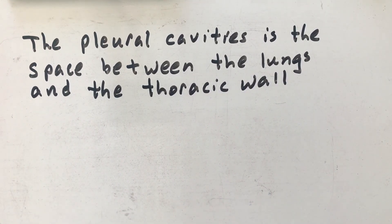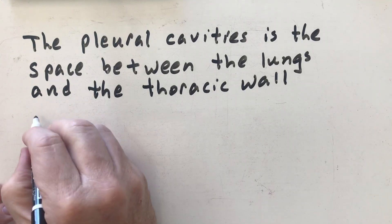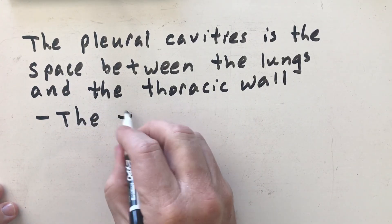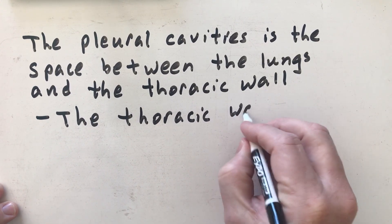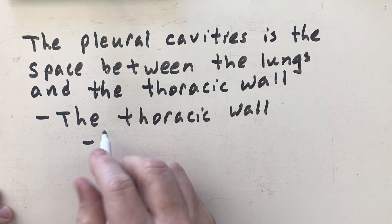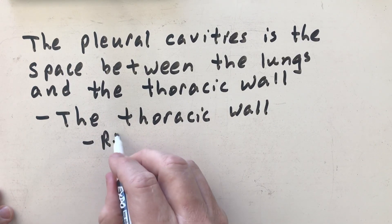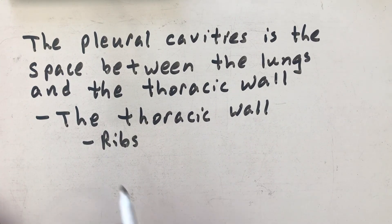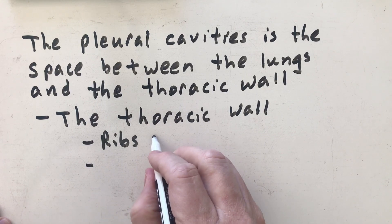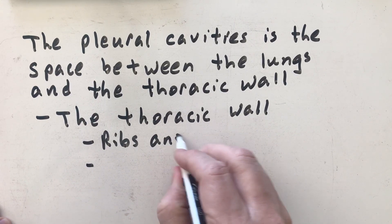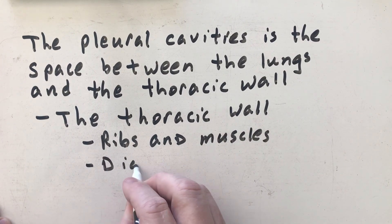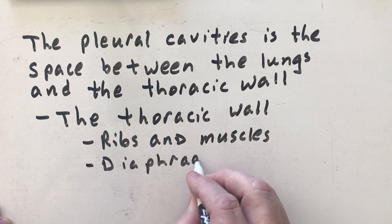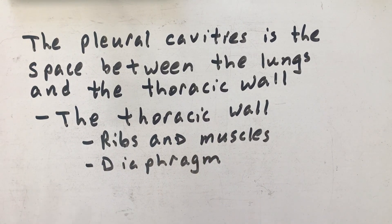The thoracic wall is made up of basically two parts: it's made up of the ribs and the muscles between the ribs, which are the intercostal muscles. And also the diaphragm — the diaphragm is the part on the bottom of the lungs. We're going to be drawing pictures of these.